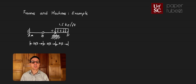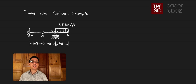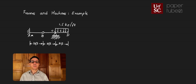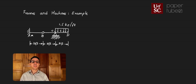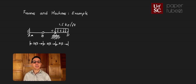Let's look at an example for frames and machines. In this particular example we're looking at a frame described by this ABCD system. At A we have a fixed support, at B we have a pin between elements AB and BD, at C we have a roller, and between C and D we have a distributed force of 1.5 kips per foot. The distances between A and B, B and C, and C and D are 10 feet each.